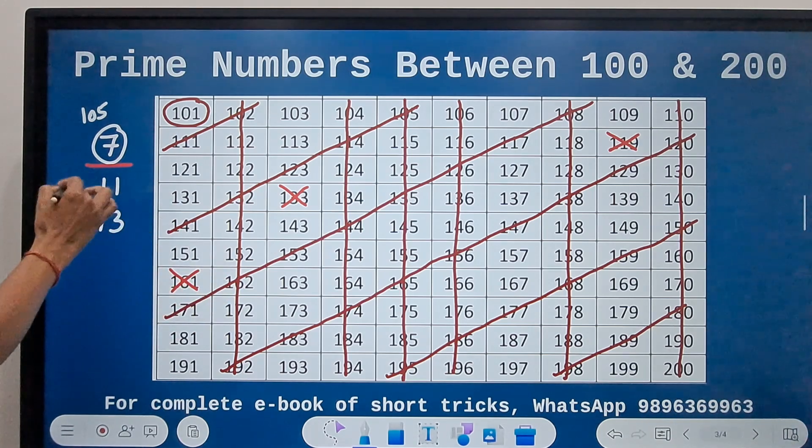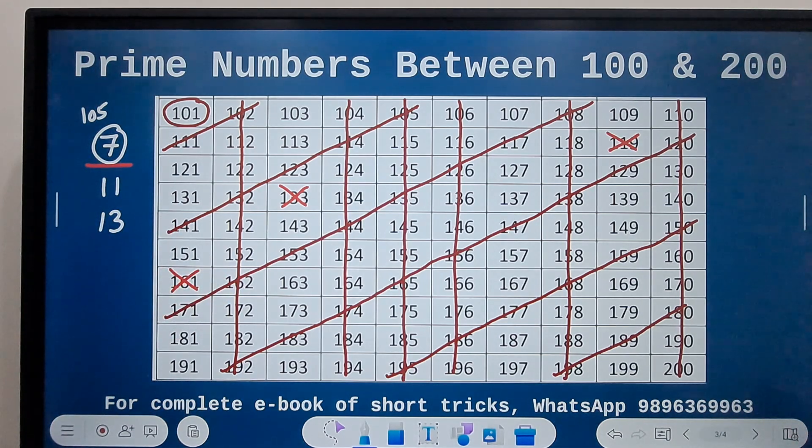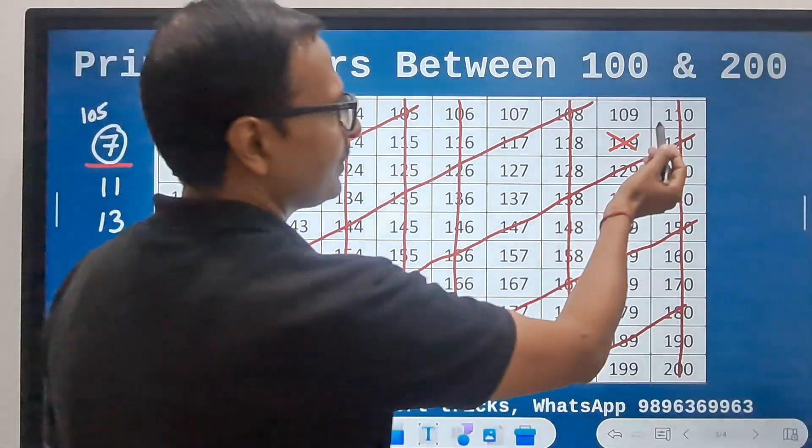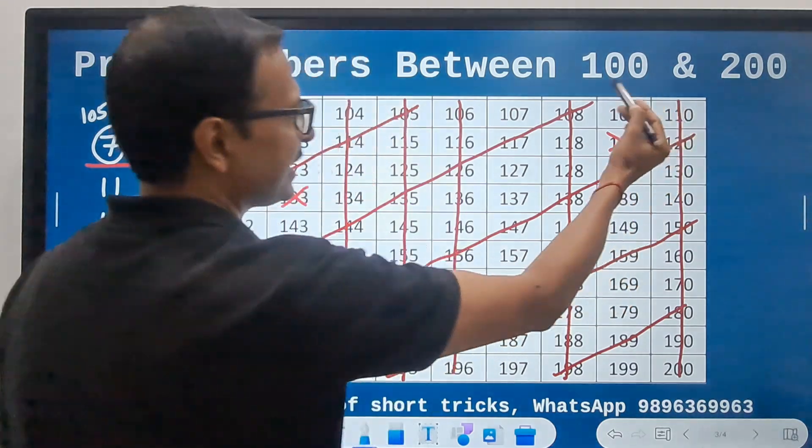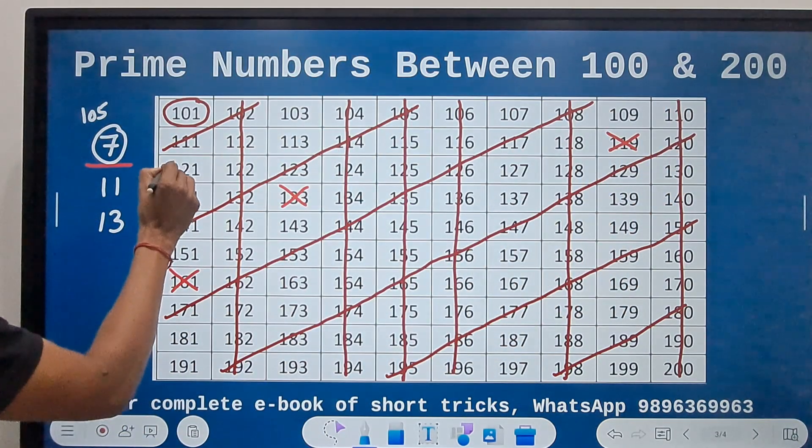Now let's get into 11. For 11, we know that 110 is divisible by 11, right? So that is the first multiple of 11. Now where is the next multiple? So 121 ruled out.